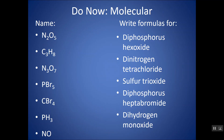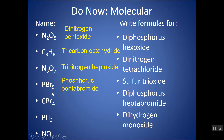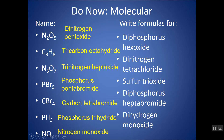Take a moment and try these examples — pause the video, then check your work. Here are the answers: N2O5 is dinitrogen pentoxide (you can drop the trailing vowel before oxide). C3H8 is tricarbon octahydride. N3O7 is trinitrogen heptoxide. PBr5 is phosphorus pentabromide — no mono on the first element since its subscript is 1. CBr4 is carbon tetrabromide. PH3 is phosphorus trihydride. NO is nitrogen monoxide — keep the mono on the second element, but drop it on the first.